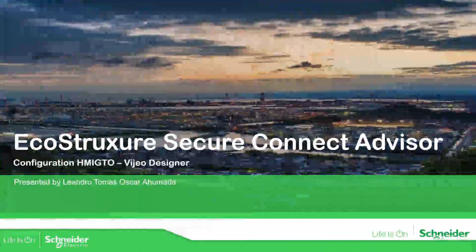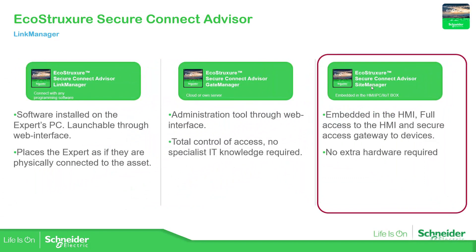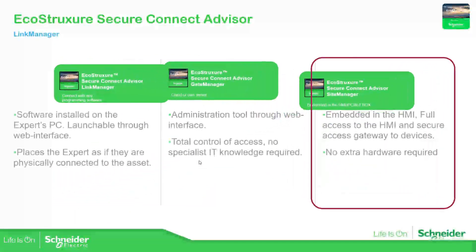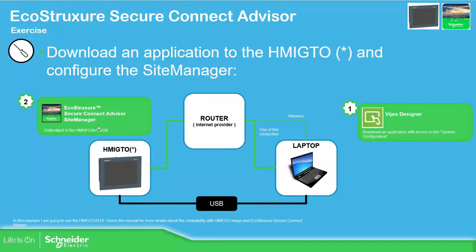Let's go to the presentation. This is our architecture — what we want to do is implement the EcoStruxure Secure Connect Advisor solution in order to use our HMI. The gate manager will be in the cloud, allowing us to connect the HMI to our laptop, connecting the technician to the remote site. The link manager will be installed on your laptop. Now we're going to see how we need to configure the site manager on the HMI.